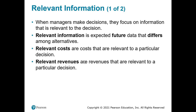Relevant information is future data that is unique to each decision you make. Relevant costs are costs that are only going to be incurred if you make that decision; relevant revenues are revenues that are only going to be realized if you make that particular decision. If a cost is shared amongst all of your different decision options, it's irrelevant because it won't change the profitability comparison. Similarly, baseline revenues that come from other sources and aren't affected by the decision you're trying to make are irrelevant — you'll realize those revenues no matter what decision you pick.